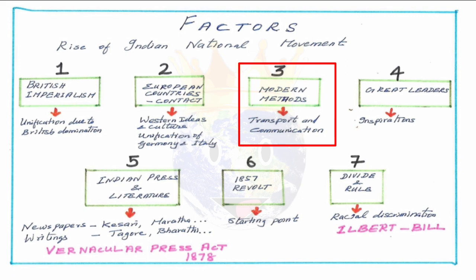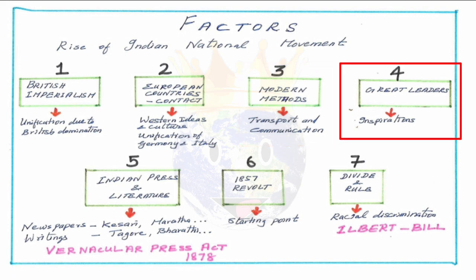The third factor is modern methods of transport and communication, which connected people from every nook and corner of the country, enabling them to share what they felt and what they wanted to do. The fourth factor is great leaders — leaders like Tilak, Nehru, Gandhi, and many more, and social reformers like Rajaram Mohan Rai and Vivekananda. They all spread ideas of national awakening and served as inspirations for Indian people, making them stand against British rule.